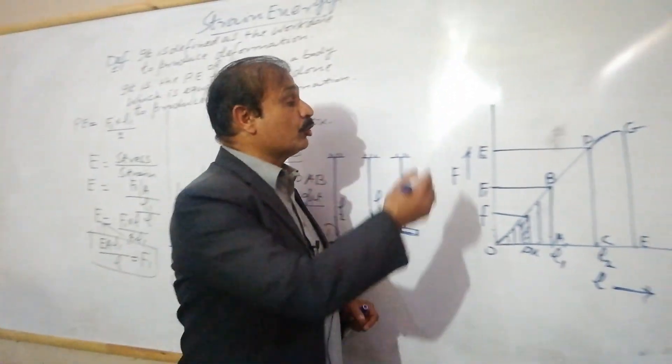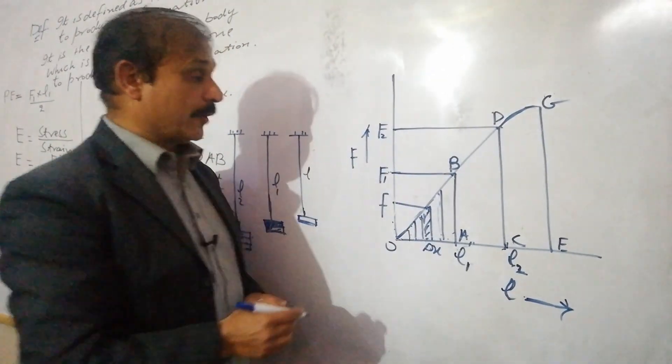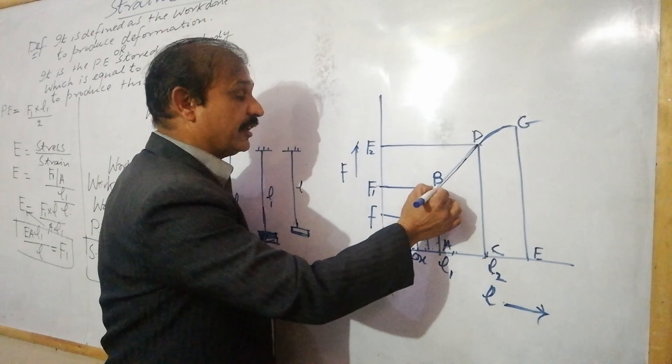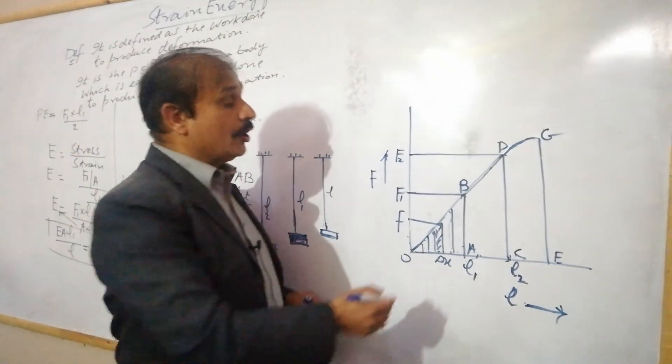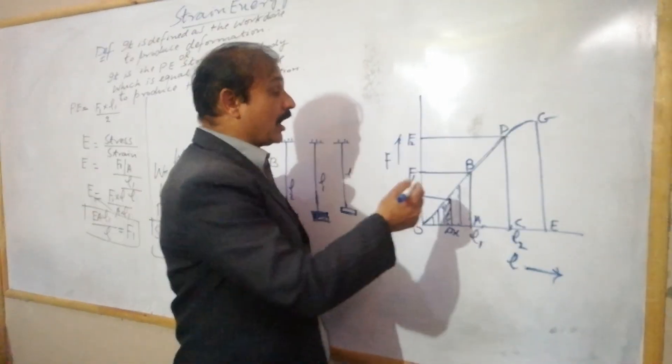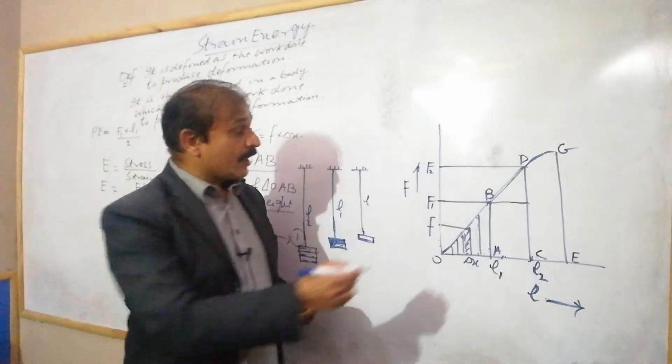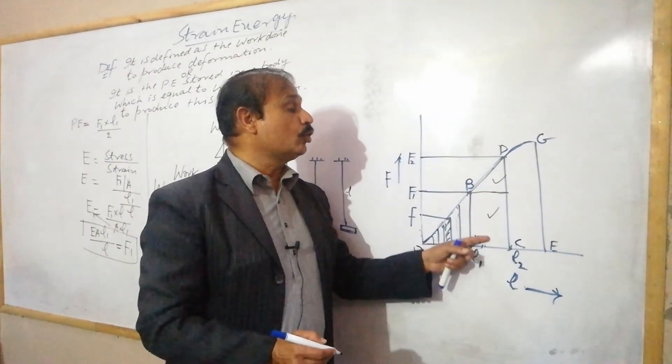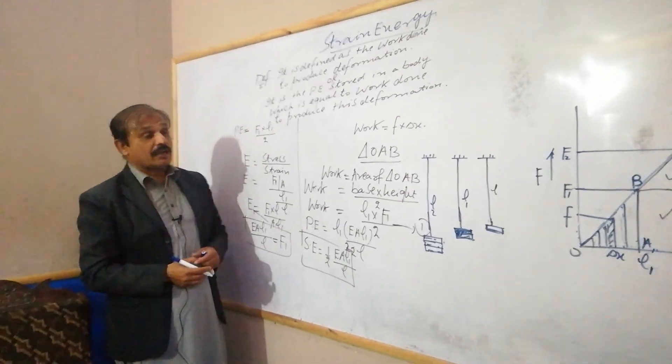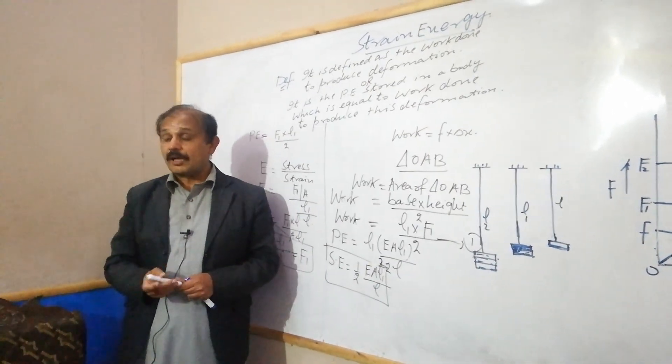If we keep on going, you can see in this case if there is a body with extension L2 and force F2, and you want to calculate the strain energy or work done, we have this portion which is a trapezium. In trapezium, the sides are not equal. So what do you do? We will take the trapezium area. We have two diagrams: one triangle and the other is a rectangle. If we have two areas, we will take the area of the trapezium. In this way we can calculate the strain energy. Its relation is half E A L1 square divided by L. That's about the strain energy.